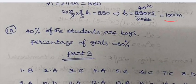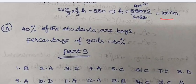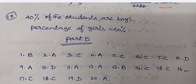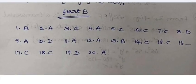Question 18 is not so clear. 40% of the students are boys. The remaining, which means 60%, are girls. In Part B: 1-B, 2-A, 3-C, 4-A, 5-C, 6-C, 7-C, 8-D, 9-A, 10-D, 11-A, 12-A, 13-B, 14-C.